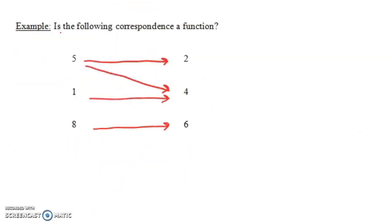Let's do another example. Is the following correspondence a function? We do have a correspondence between a first set and a second set, but this time we have a problem because 5 corresponds to two different things. So this is not a function. The problem is not that two arrows go to 4 — that's not a problem. The problem is that 5 corresponds to two different things, and to be a function, each element of the domain has to correspond to exactly one element of the range.